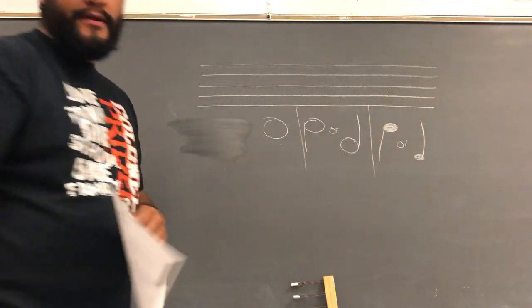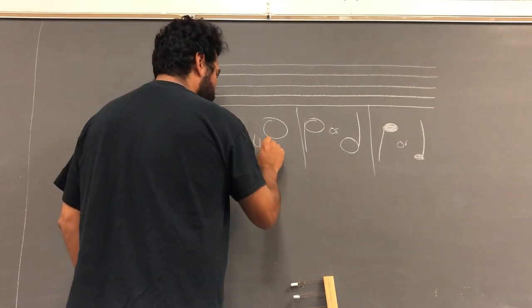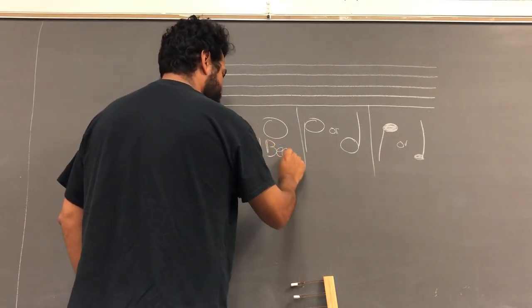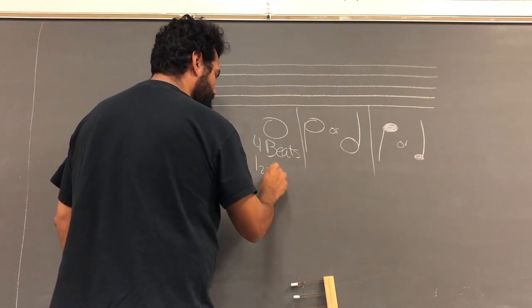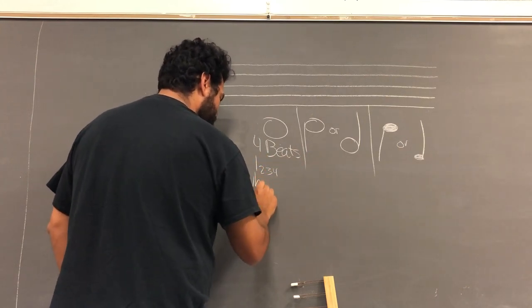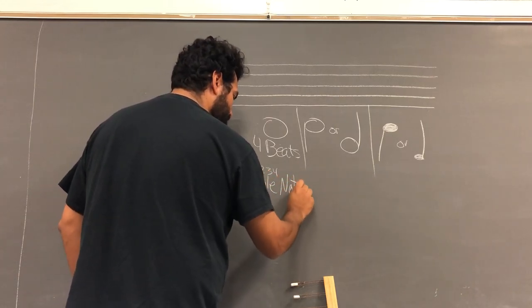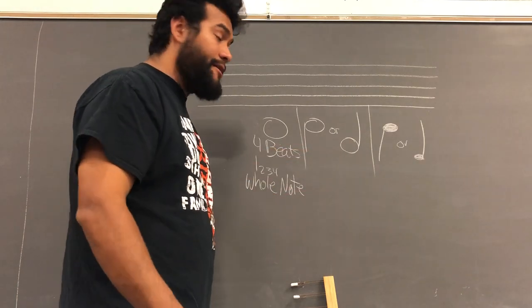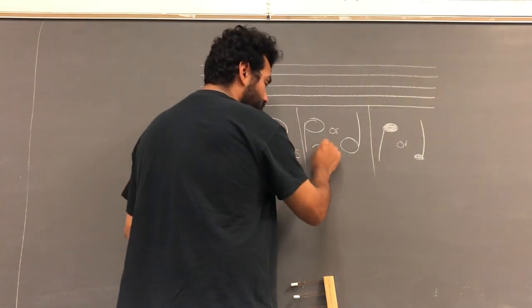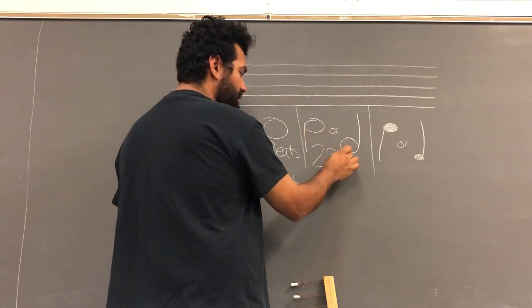So the whole note takes up 4 beats, all 4 beats in a measure. The countings are 1, 2, 3, 4. And that's how it's built, whole note. Half note kind of looks like the whole note, but it has a stem on it. And they take up 2 beats each. So this one takes up 2 beats, that one takes up 2 beats.